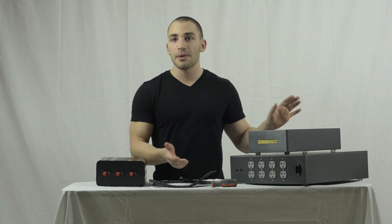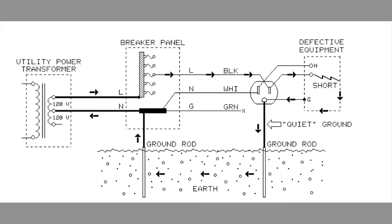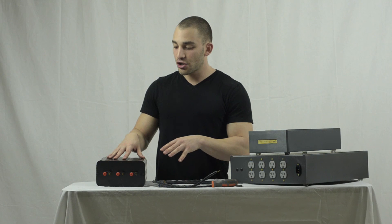Another misconception is that a lot of audiophiles think they need a dedicated ground rod for their audio system that's separate from the rest of the house. The biggest issue with using a separate ground rod is that soil is an awful conductor with very high resistance. Because those two ground points are connected in your home, current will flow through one ground rod and into the other before getting to the breaker panel, and this can create huge voltage mismatches that can actually increase your noise floor.